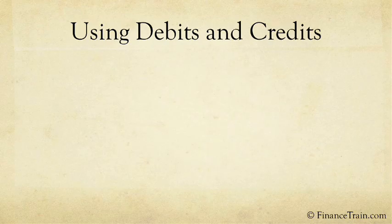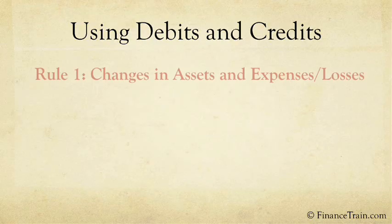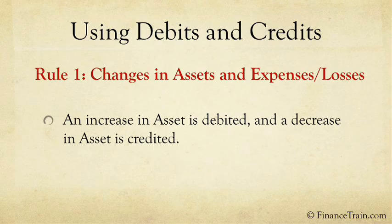How does one know what should be debited and what should be credited? There are two fundamental rules to memorize with respect to debits and credits. The first rule is for recording a transaction related to assets, expenses, or losses. An increase in asset is debited and a decrease in asset is credited.